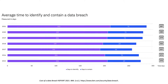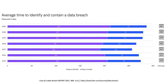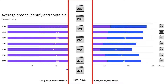Another part of the IBM study looked at the average time to identify and contain a data breach by year. In 2021 it took 287 days, in 2020 it was 280 days, all the way down to 275 days in 2015. There was no real reduction in the time it takes to identify and contain a data breach. You would think that as we improve our cybersecurity these numbers would be going down.